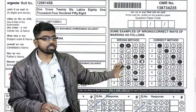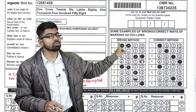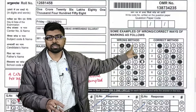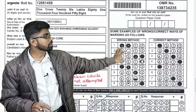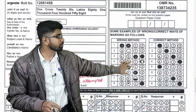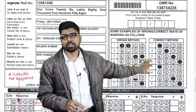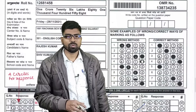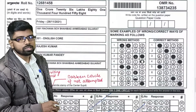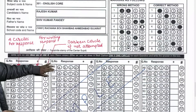A sample is given showing the wrong method and the correct method. If you give a tick mark or cross mark, that is not proper — that is the wrong method. You must bubble the circle completely darkened — that is the correct way to fill the OMR sheet.